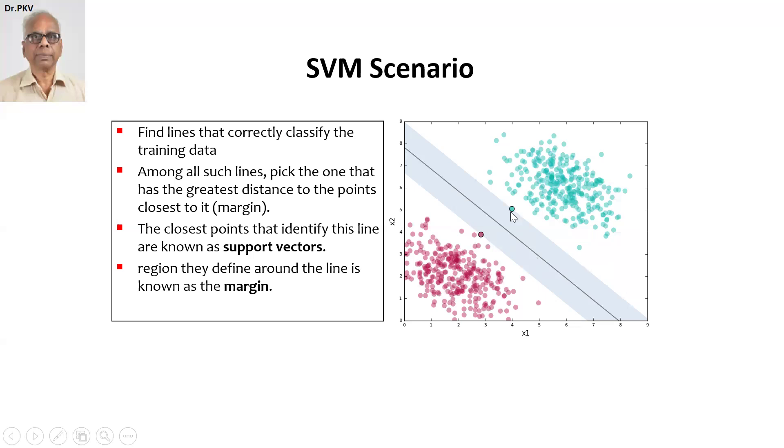At the same time, they should be away preferably even from the boundary lines that are here. There is one here, one there. So if you are able to separate and move it further in the whole situation, then the support vector will be performing at its best level in terms of separating one data set from another data set belonging to the two groups.